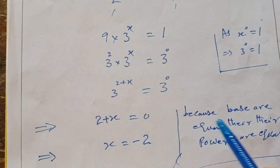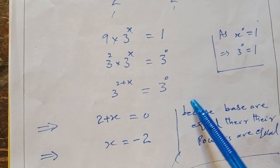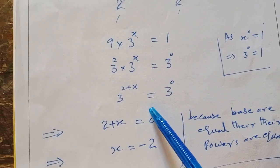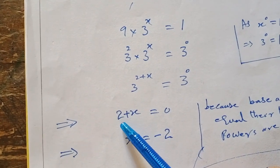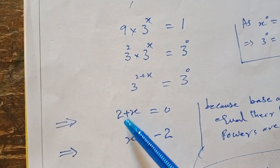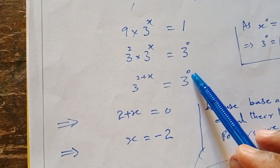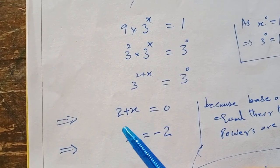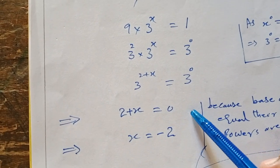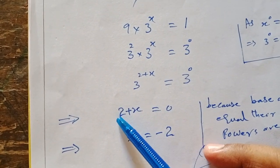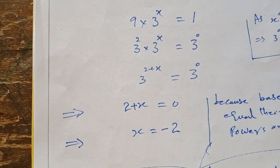Which implies that when bases are equal, then their powers are also equal. So now we write 2 plus x is equal to 0. Which implies that 2 taken to the right side, the sign of 2 is changed. Now we write x is equal to minus 2.